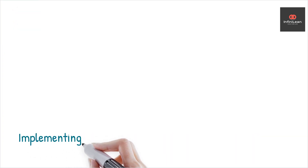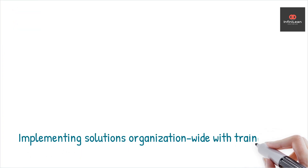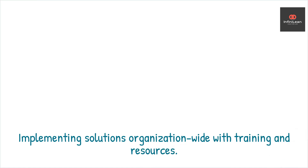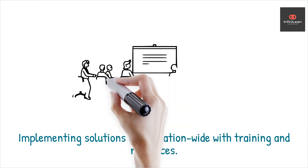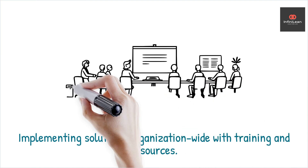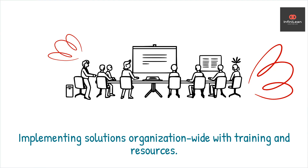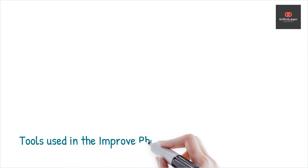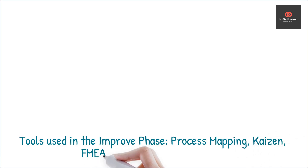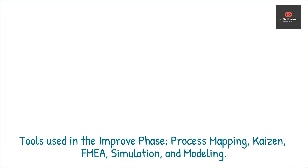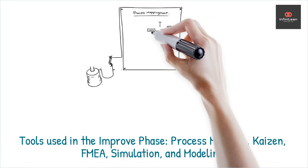Upon successful pilot tests, full-scale implementation can commence. This involves rolling out the solution across the organization and addressing any emerging challenges promptly. Ensuring the staff is adequately trained and all necessary resources are available is key to a smooth transition. Common tools and techniques used during the Improve Phase include design of experiments, process mapping, Kaizen, failure mode and effects analysis (FMEA), and simulation and modeling.